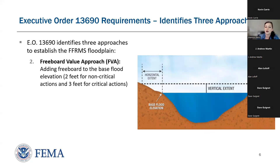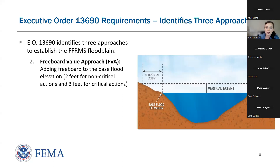The second method is the Freeboard Value Approach, or FBA, where we simply add freeboard to the base flood elevation. The amount of freeboard depends on whether the project is critical or non-critical: two feet for non-critical actions and three feet for critical actions. The third approach is the 0.2% annual chance flood approach — essentially using the 0.2% annual chance floodplain as the FFRMS floodplain level. All agencies are looking at various FFRMS approaches to meet the executive order requirements and craft their own agency policy.